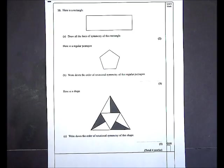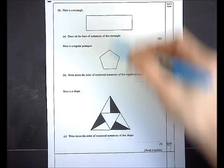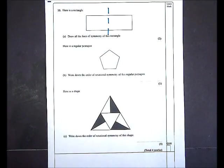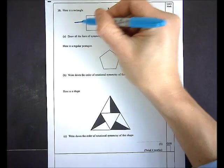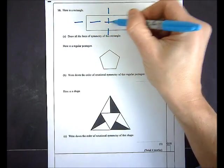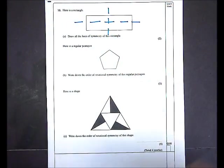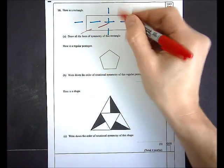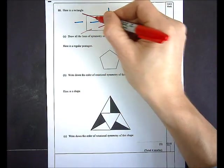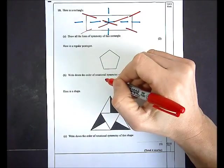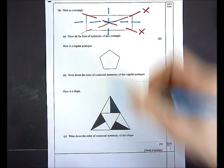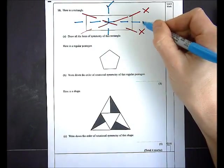Question 10 shows a rectangle and I'm asked to draw all the lines of symmetry. It folds nicely in half down the middle and again across the centre, giving two lines. Note that diagonal lines are not lines of symmetry for a rectangle — only the two lines through the centre count.